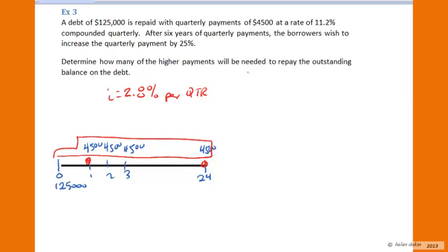This is a multi-stage problem. What we need to do first is take a look at this time diagram and ask ourselves the question: how much are they still going to be owing after the sixth year? Instead of using a focal date of zero as the present value, I'm going to move my focal date over to the end of year six and ask what is the balance that is outstanding on the loan at that time period.